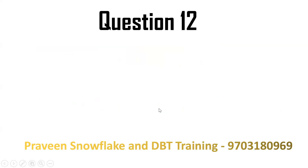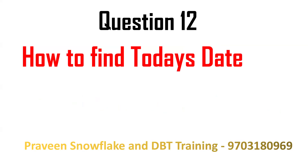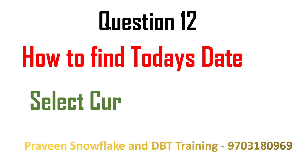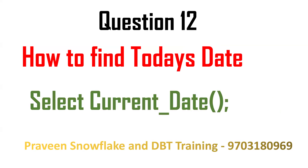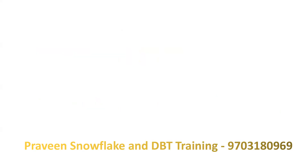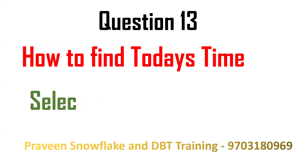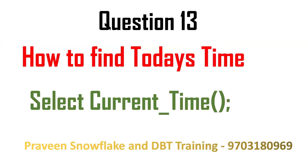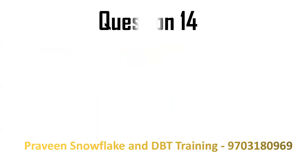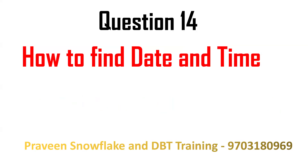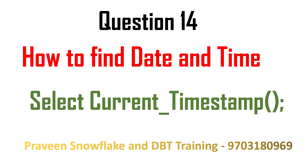Next question: how to get today's date? Go for SELECT CURRENT_DATE(). By using CURRENT_DATE, we can figure out today's date. Same thing — to find the current time, use SELECT CURRENT_TIME(). Next: if you want date and timestamp together, go for SELECT CURRENT_TIMESTAMP(), which will give you the date, month, milliseconds, and time zone.